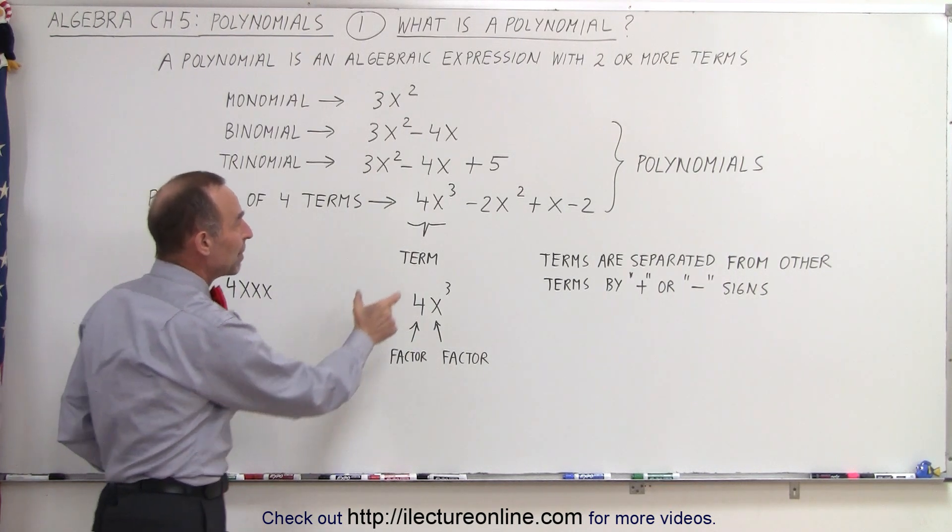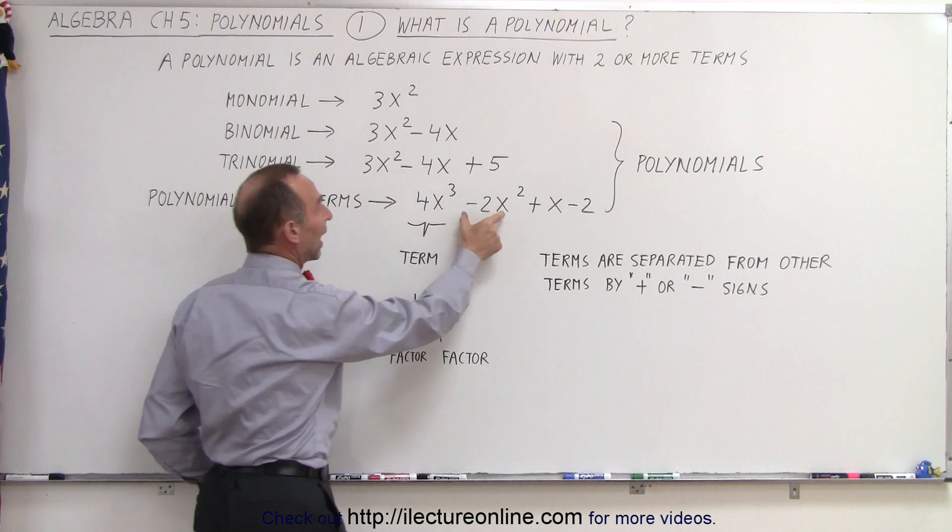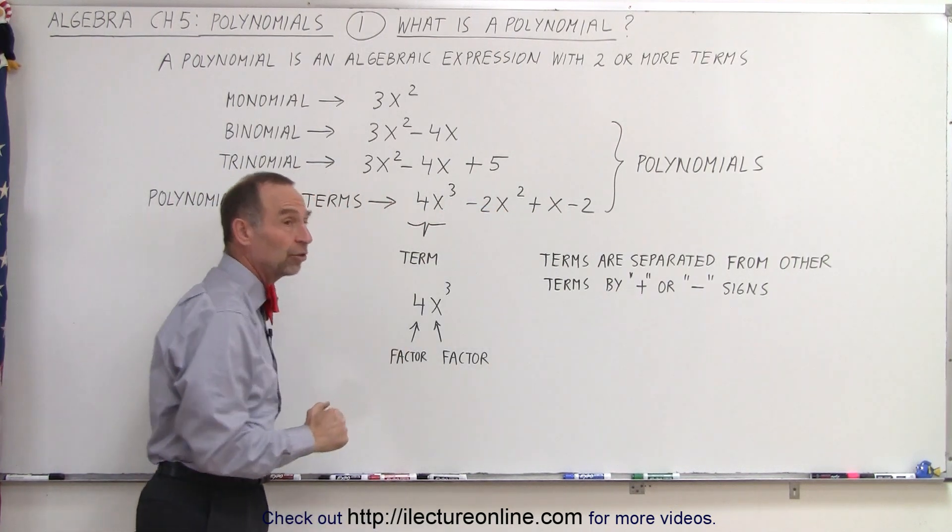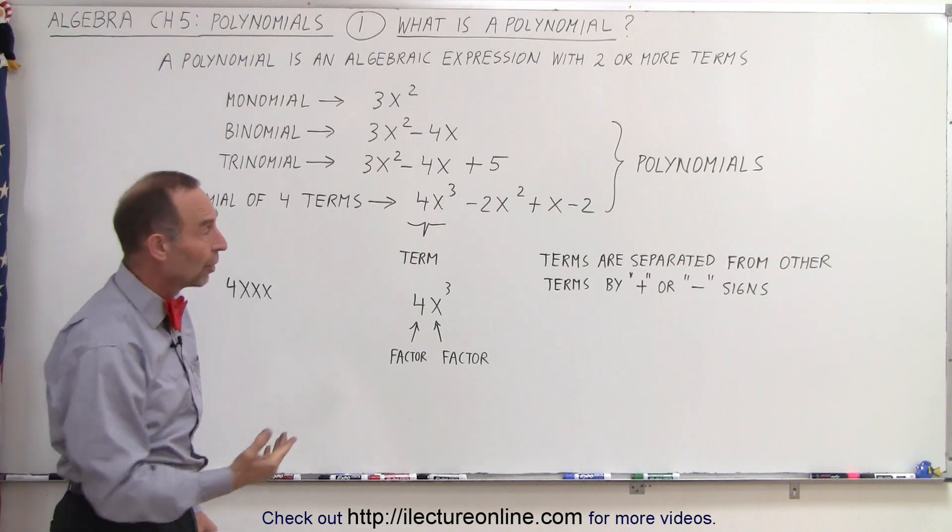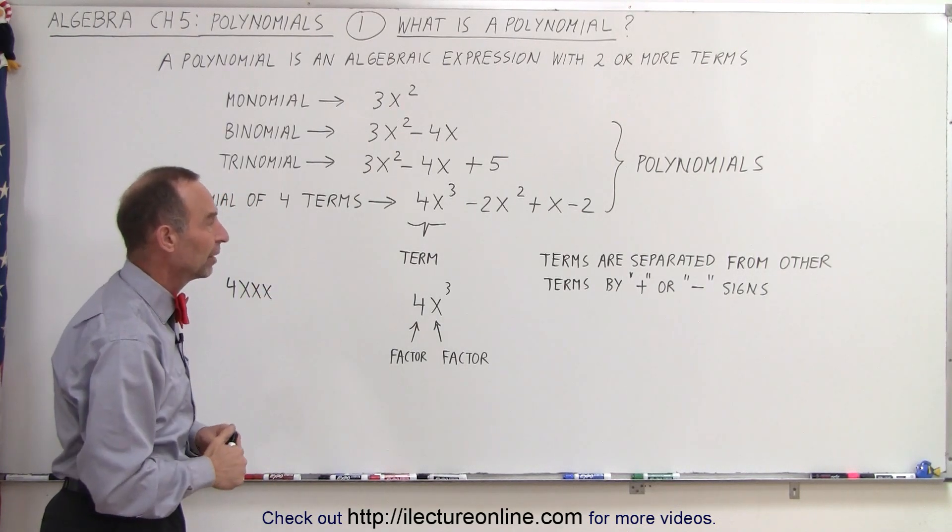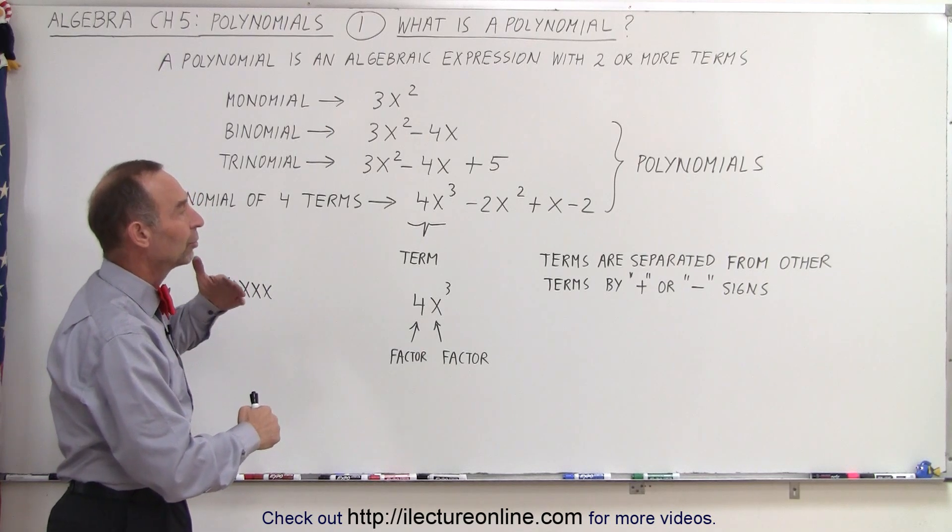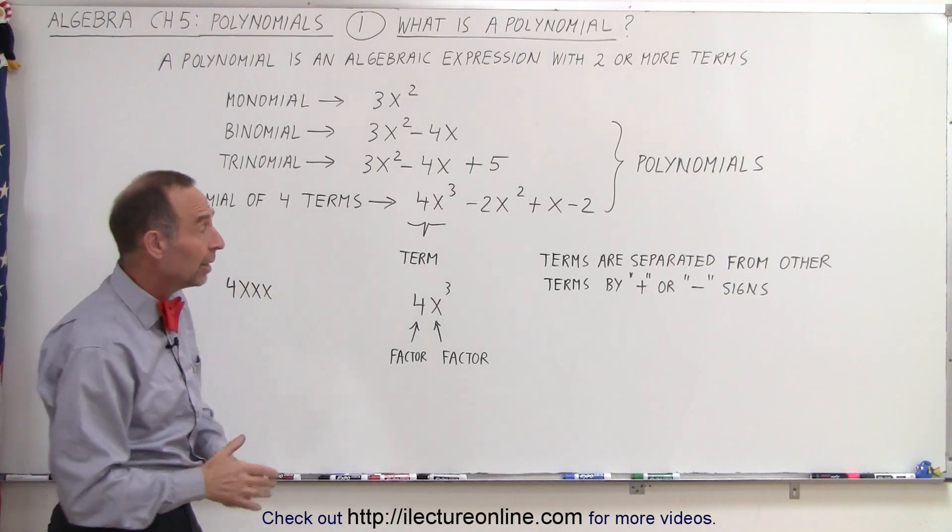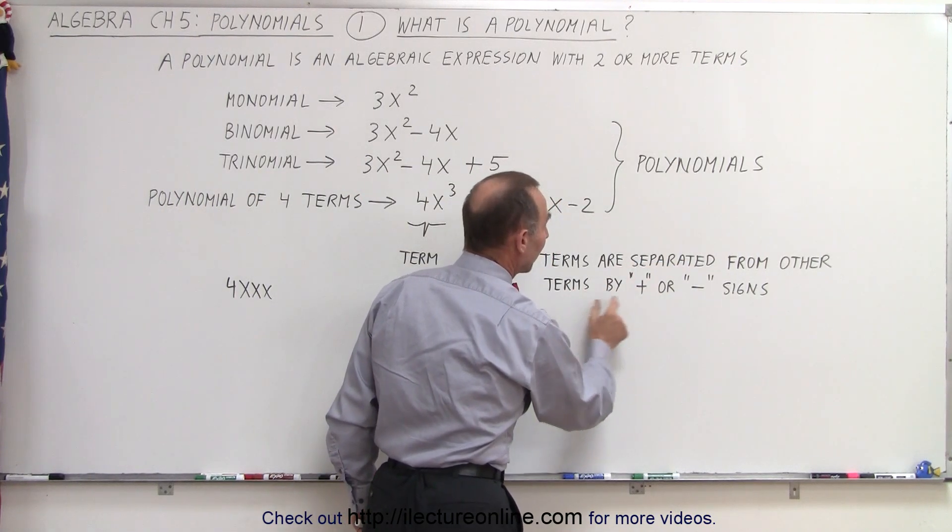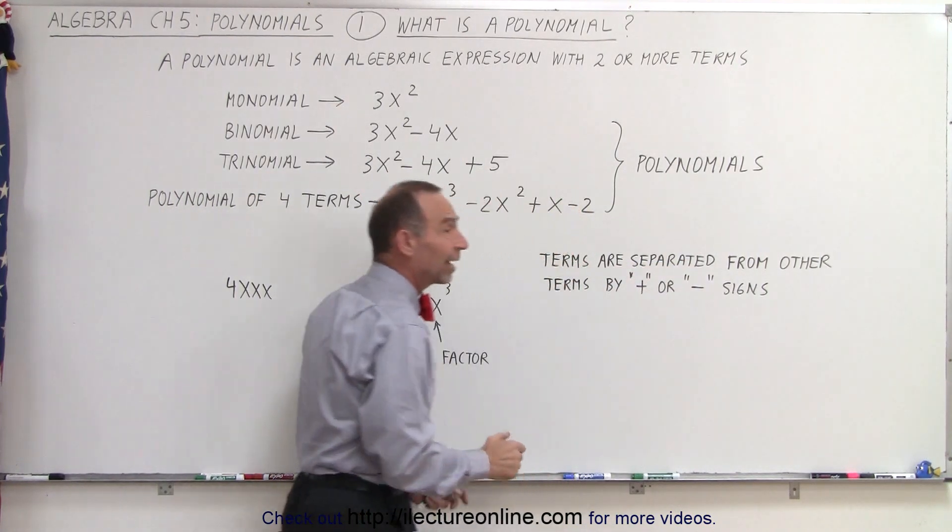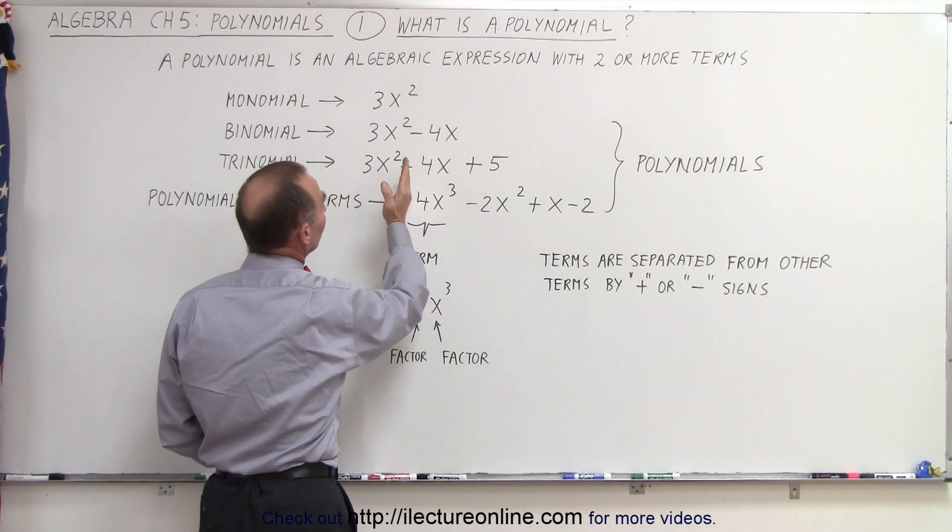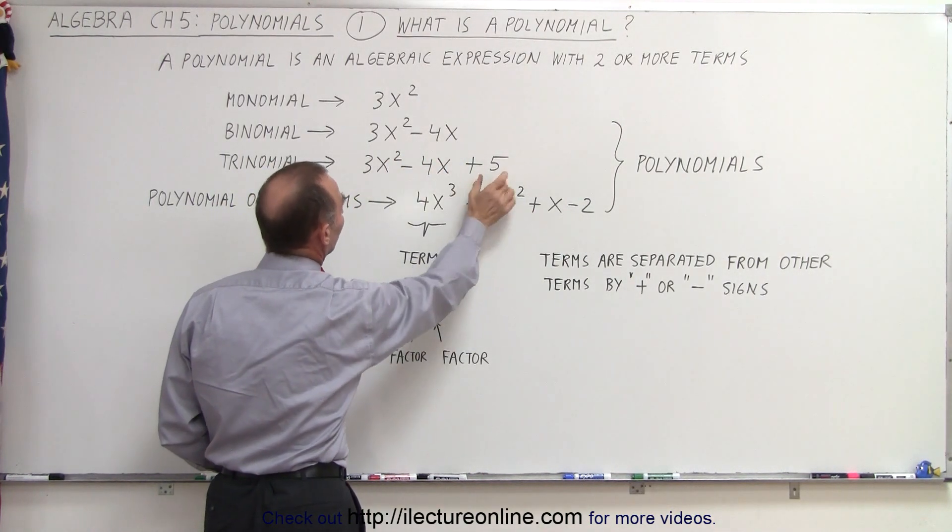Those factors multiplied together make terms, and terms added to each other or subtracted from one another make algebraic expressions, which are called polynomials when there's more than one of the terms in the expression. If there's only one, it's called a monomial. And finally, we can say that terms are separated from one another by either plus or minus signs, so you can see that whenever you see a minus sign or a plus sign, those are separations between terms.